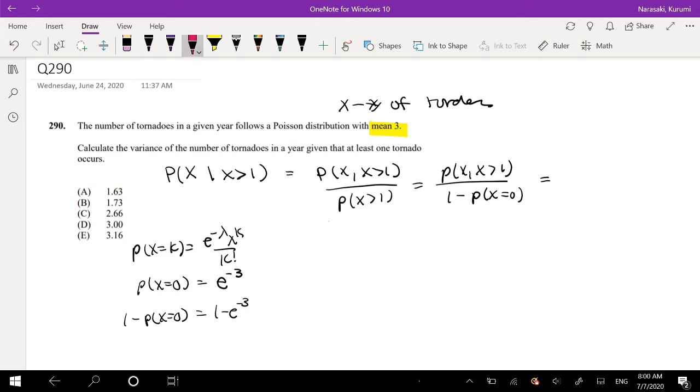And again, we're going to use our beloved formula, variance of X equals E of X squared, the second moment, minus the first moment, the whole thing squared.